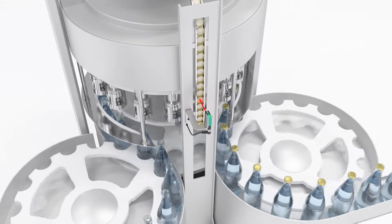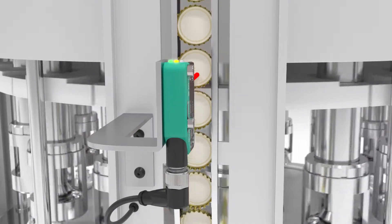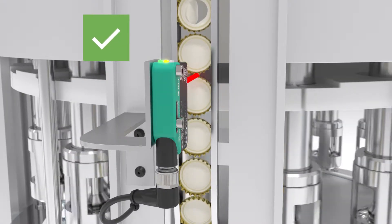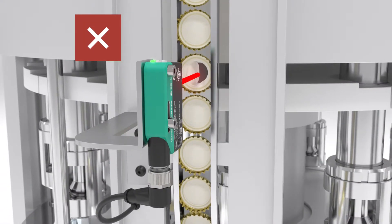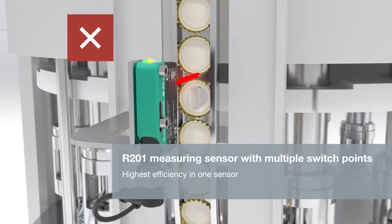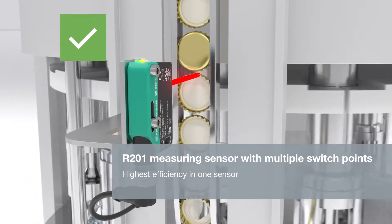Thanks to multi-pixel technology, the R201 measuring sensors with multiple switchpoints and standard housing designs, recognize damaged and incorrectly positioned caps in the feeding process.